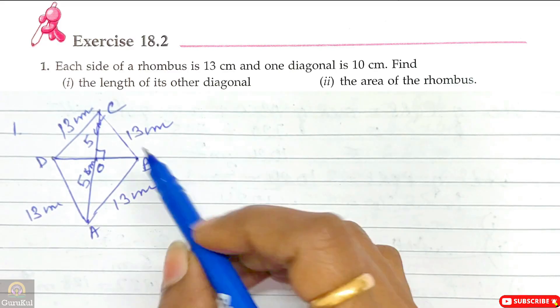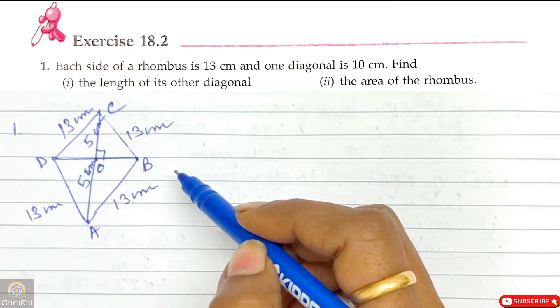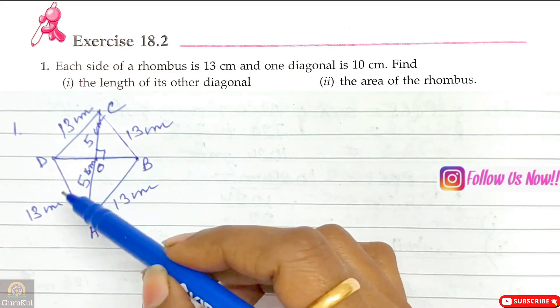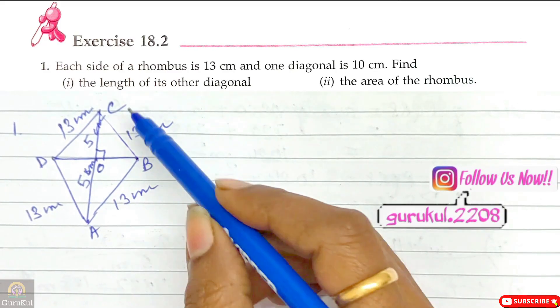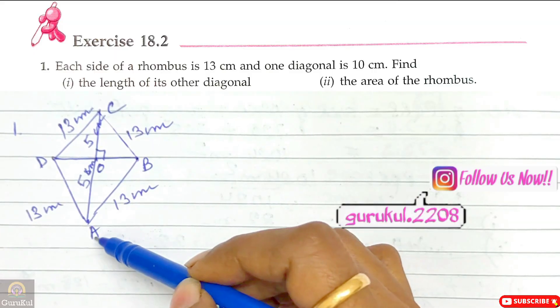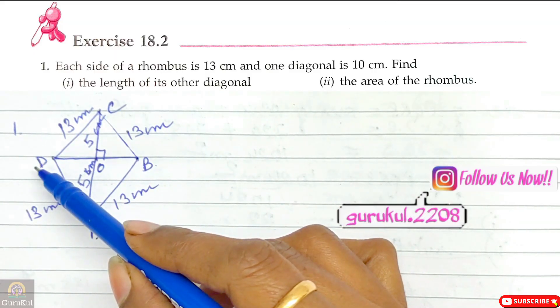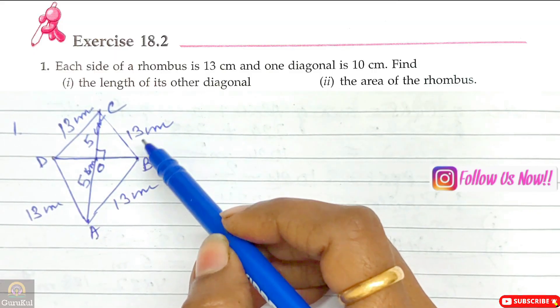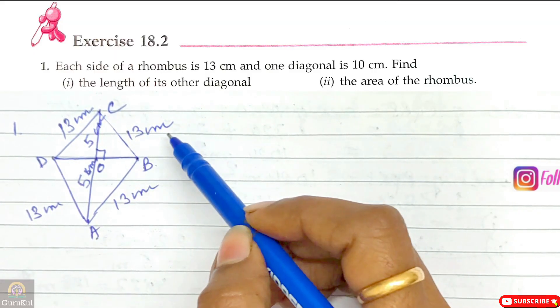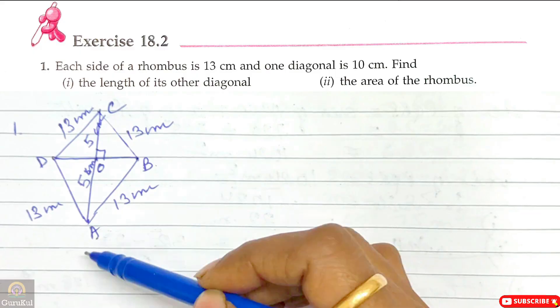Today I am going to start with part 1 of exercise 18.2. Now question number 1. As you can see on the screen, I have sketched a rhombus A, B, C, D whose side is 13 cm each.